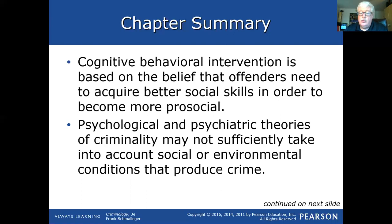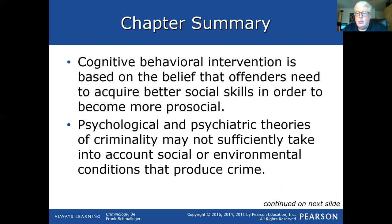Cognitive behavioral intervention is based on the belief that offenders need to acquire better social skills in order to become more pro-social. This is where correctional psychology programs try to teach them the right way versus the wrong way — help them relearn, develop new scripts, model appropriate behavior as opposed to what they previously learned. One of the problems in the prison system is that people are surrounded by other criminal types who may be modeling negative behaviors, and inmates may learn new negative behaviors before they get out. Some systems are trying to create an overwhelming culture of positive modeling and behavioral intervention to counter that. Psychological and psychiatric theories may not sufficiently take into account social or environmental conditions — they don't talk about poverty or rundown neighborhoods — but they do talk about how you react to those conditions and what you learn from them.